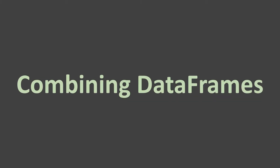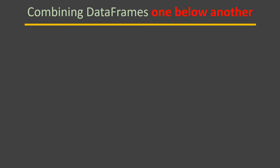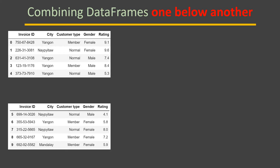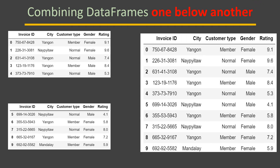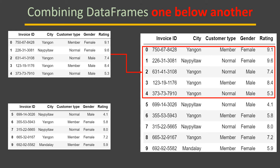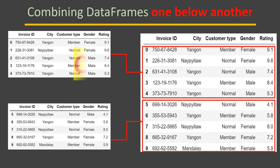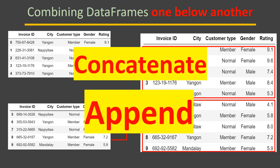Combining data frames. There are two situations in which we like to combine data frames. Number one is combining data frames one below another. Here we have one table and another table, and we want to combine them so the data from the first table is on top and the data from the second table is just below that. This is called one below another, and to do this we can use two methods: concatenate or append.